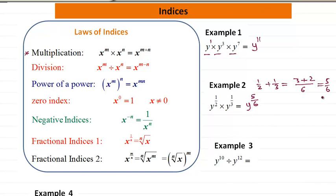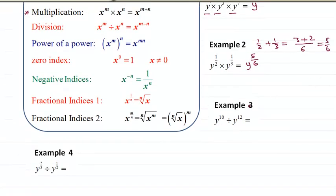Example 3. This time we are dividing. So the divisor has the power 12. We subtract 12 from 10. The answer is going to be y to the power minus 2, which can be written using this rule here. Negative indices is 1 over y squared.